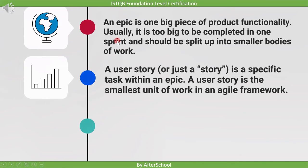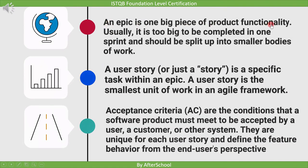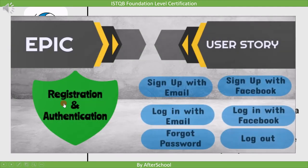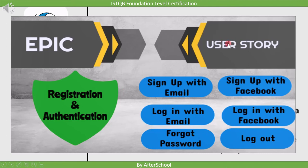An EPIC is one big piece of product functionality. Usually it is too big to be completed in one sprint, and should be split up into smaller bodies of work. A user story is a specific task within an EPIC — the smallest unit of work in an Agile framework. For example, consider 'Registration and Authentication' as an EPIC, referring to all types of registration and authentication possible by the software. As it is big functionality, when we move to user stories, we divide it into: sign up with email, sign up with Facebook, log in with email, log in with Facebook, forgot password, and log out. These are all the small functionalities within the EPIC.